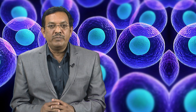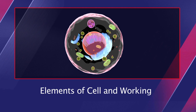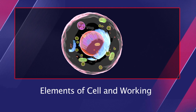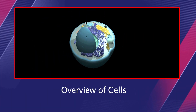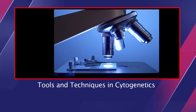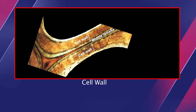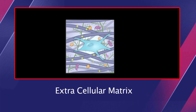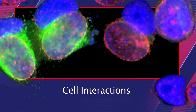The objective of this course is to give an understanding of basic elements of a cell and its working to the students. The course provides an overview of cells and talks about the tools and techniques in cytogenetics. It will also enhance your knowledge about the cell wall, extracellular matrix, cell interactions and cell division.